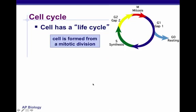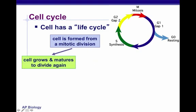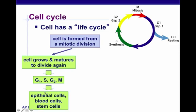The cell cycle has this life cycle: a cell is formed from a mitotic division, then can grow and mature to divide again. This is where we go through the process of G1, then S phase, then G2, then mitosis. Epithelial cells, blood cells, and stem cells do this.